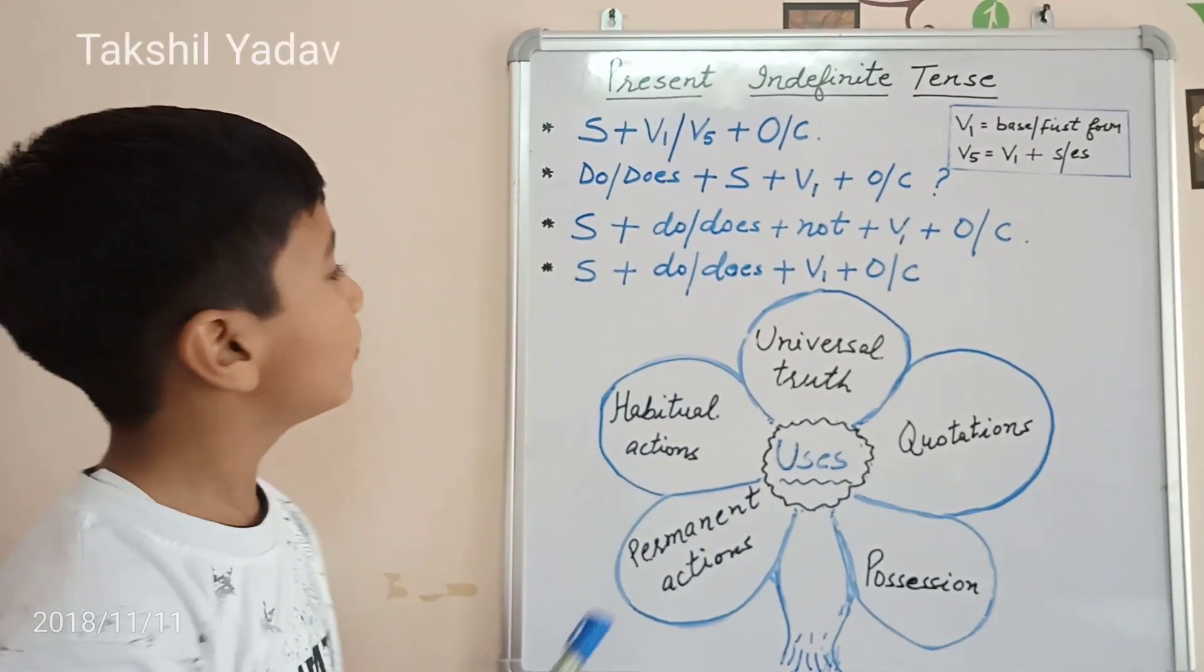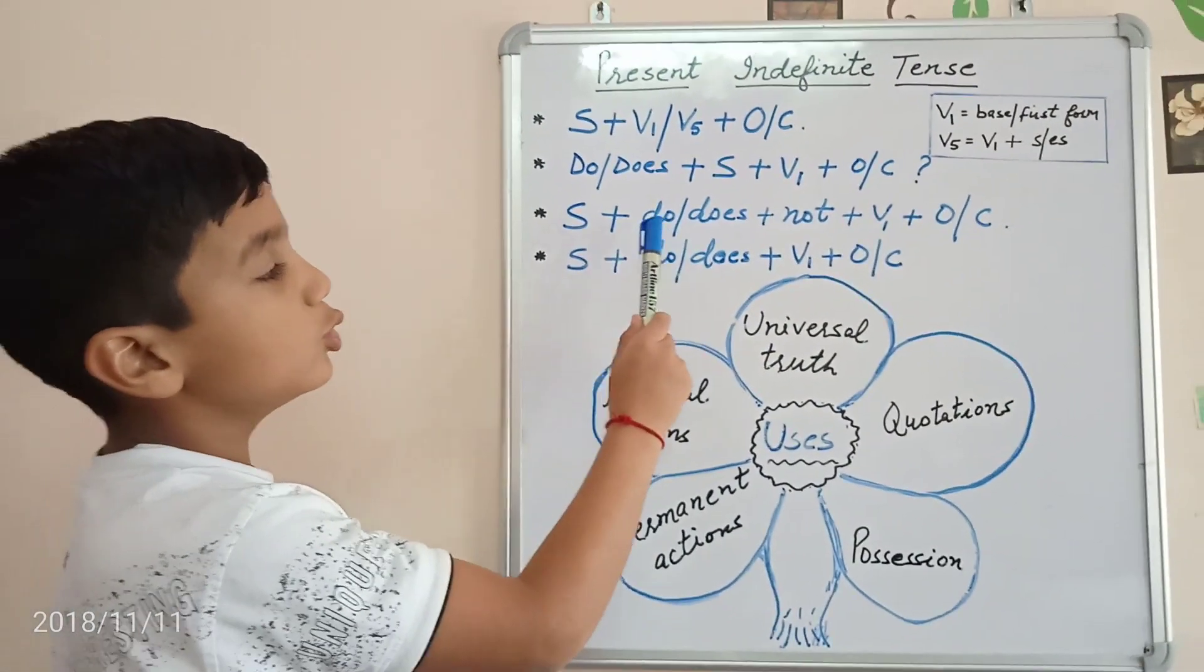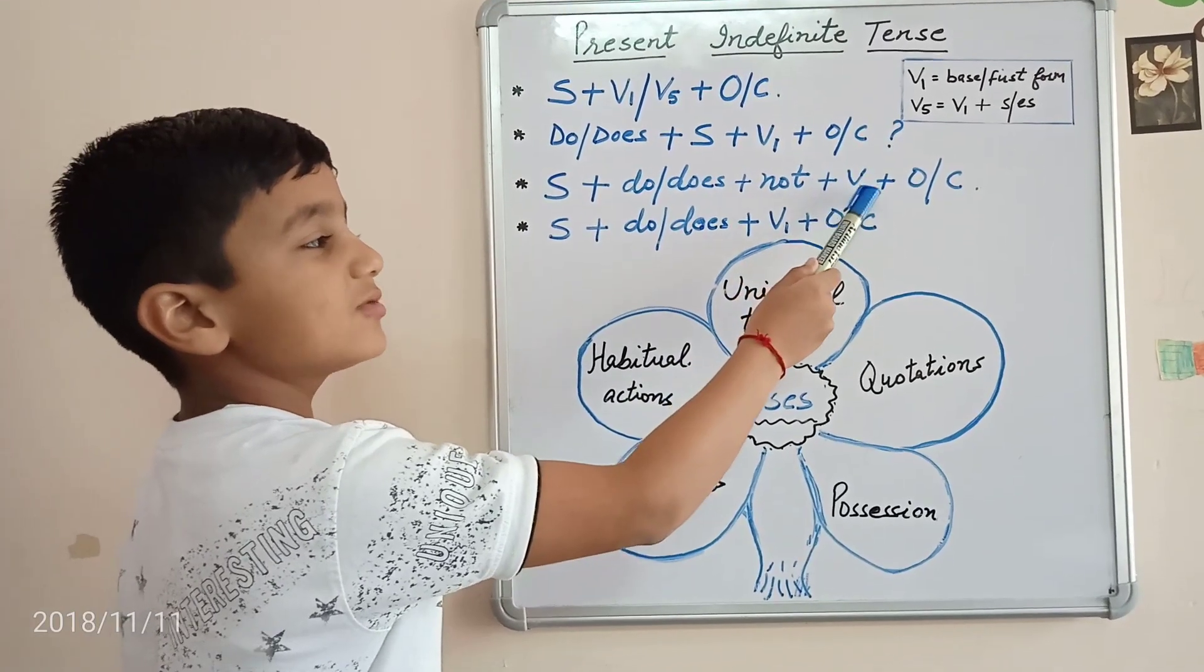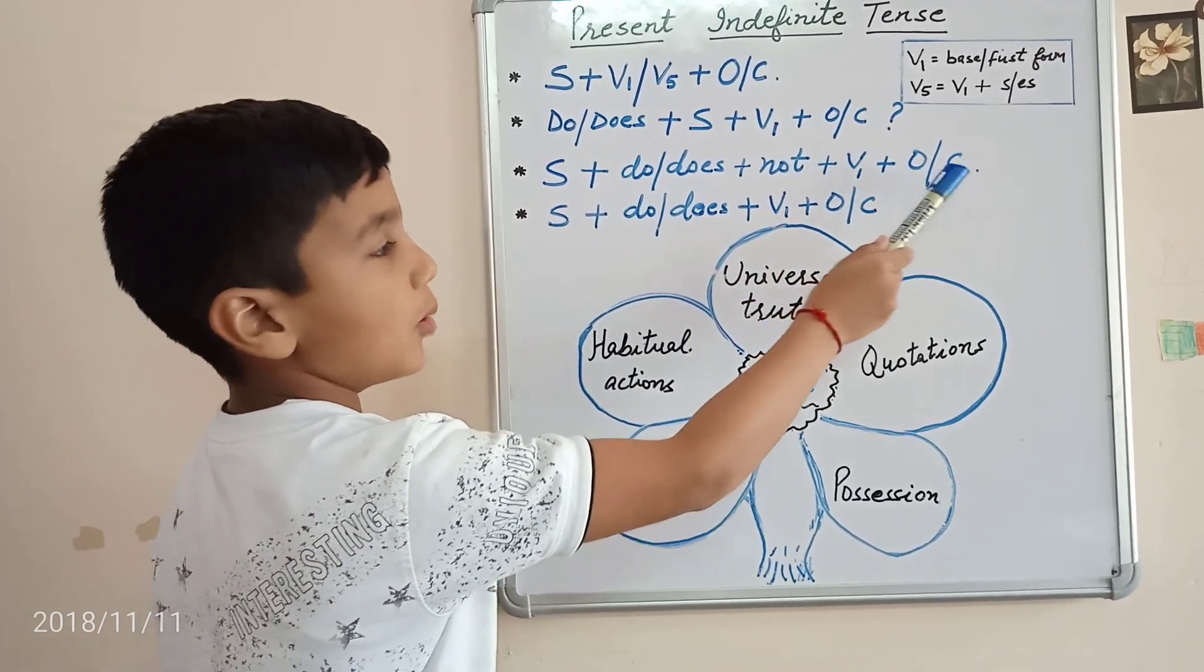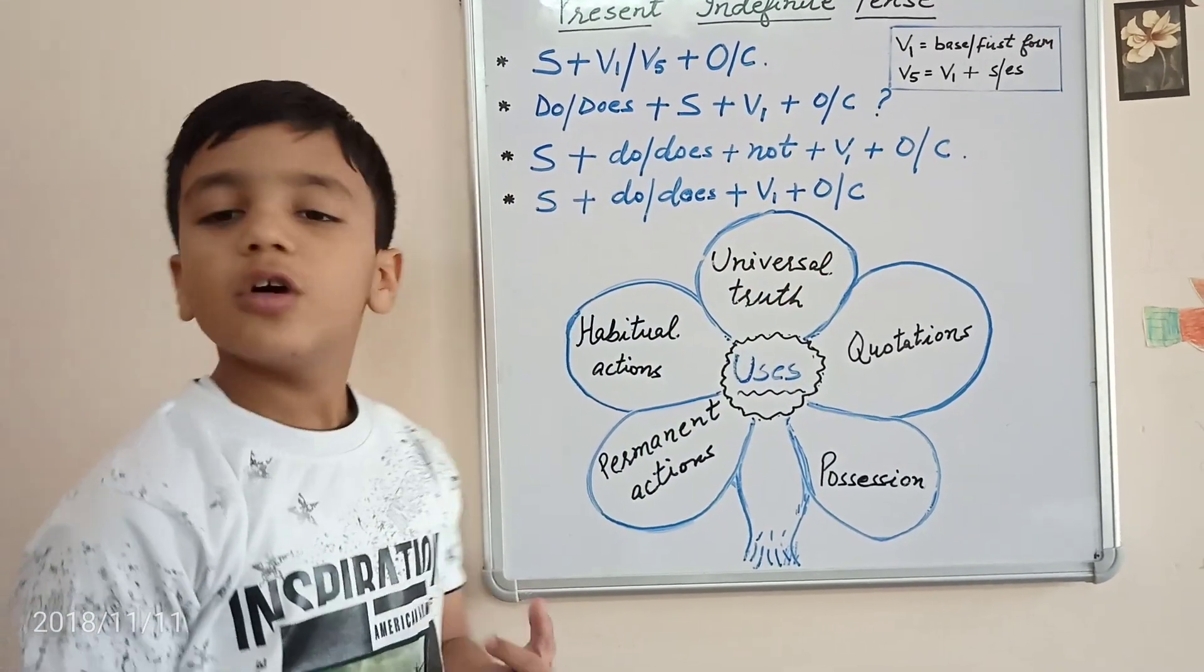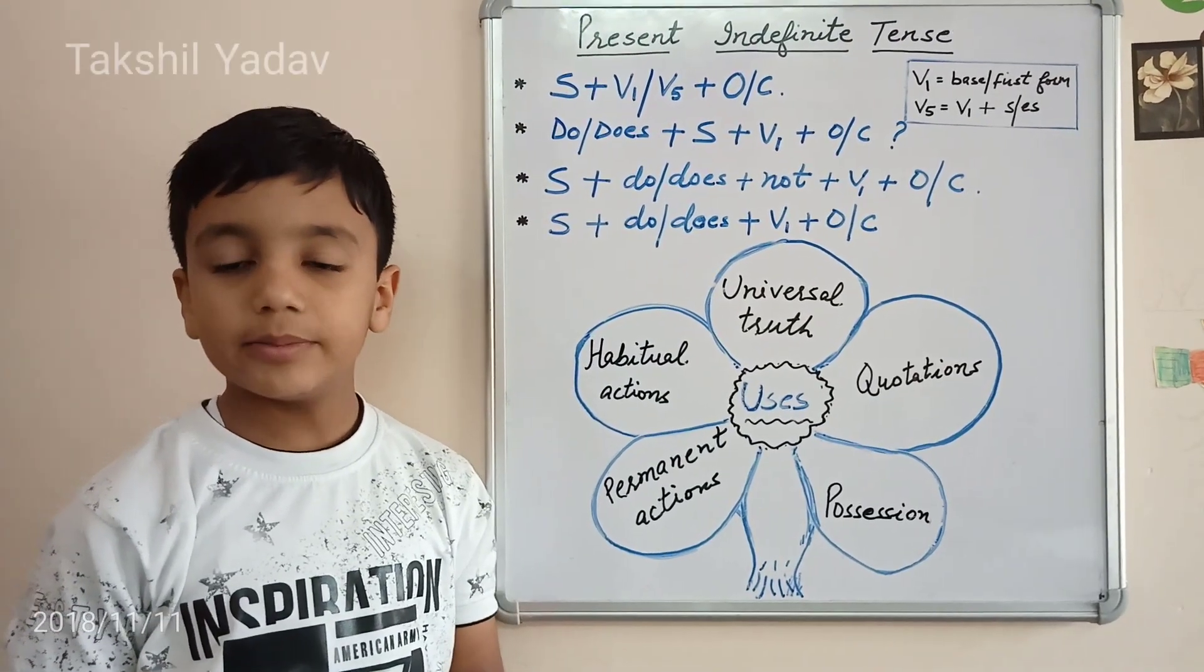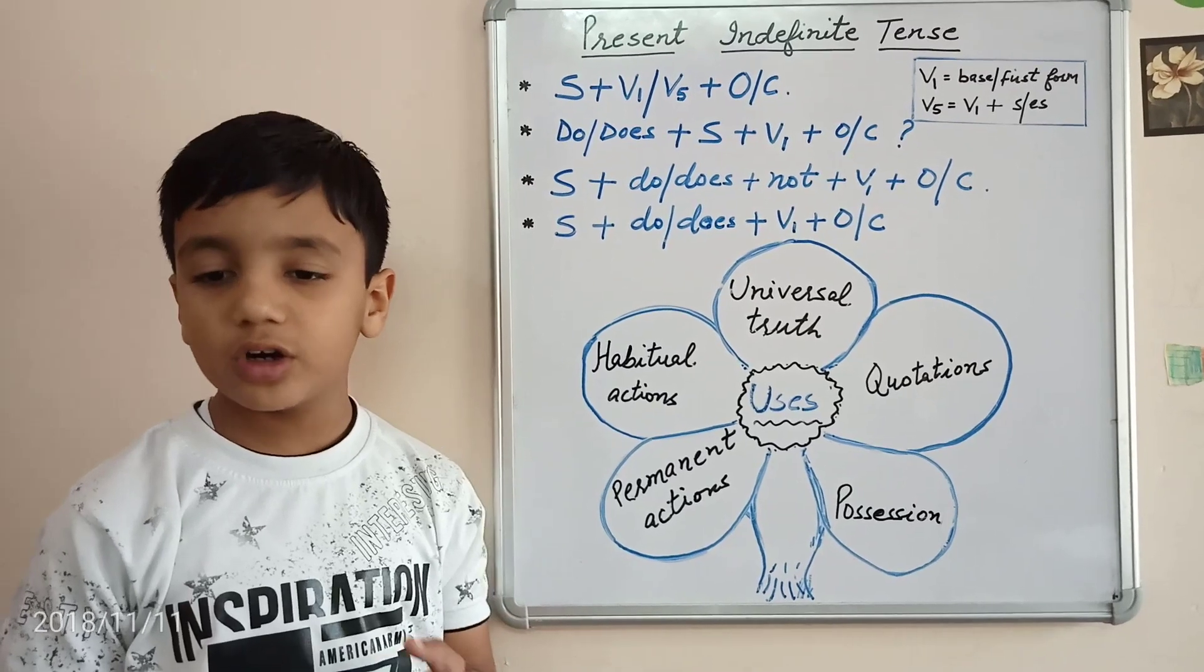Its negative structure now: Subject plus Do or Does plus Not plus the base form of the verb plus Object or Complement. For example, I do not go to school daily. He does not read a novel.